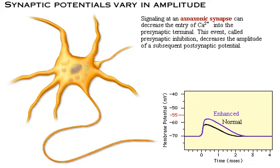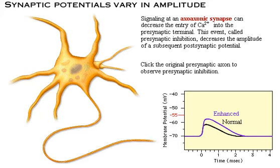Signaling at an axo-axonic synapse can decrease the entry of calcium into the presynaptic terminal. This event, called presynaptic inhibition, decreases the amplitude of a subsequent post-synaptic potential. Click the original presynaptic axon to observe presynaptic inhibition.